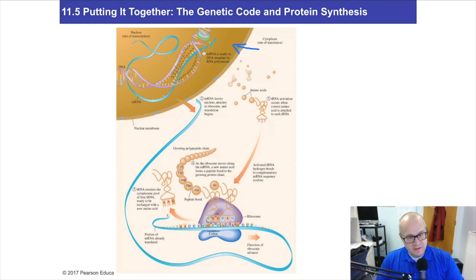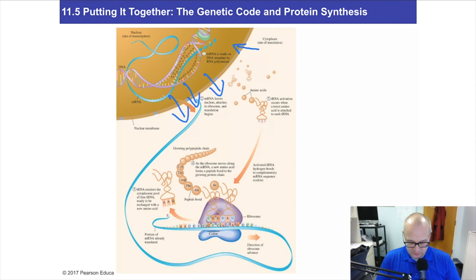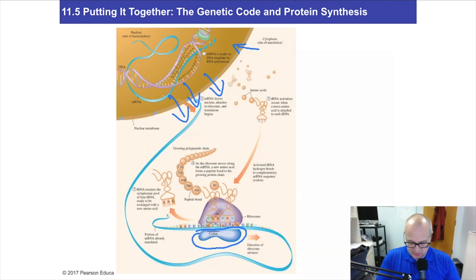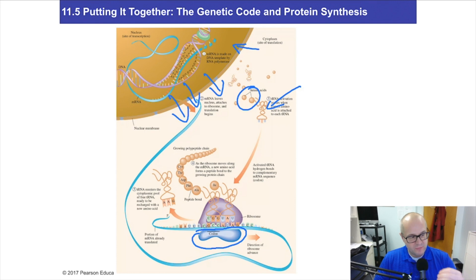That messenger RNA goes out into the cell. mRNA will find itself connected to a small subunit of a ribosome, interacting with the base pairs facing out. The DNA has made mRNA, which has left the nucleus and found a small subunit of a ribosome. Also in the cell, tRNA is finding amino acids to bind with — an enzyme attaches an amino acid to the tRNA's stem, and it's now ready for protein synthesis.